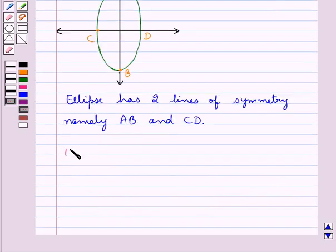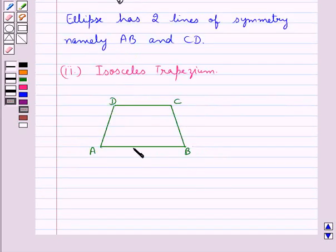Next, consider the figure isosceles trapezium. This ABCD is an isosceles trapezium in which we have AB is parallel to CD and AD is equal to BC.